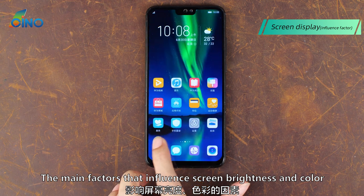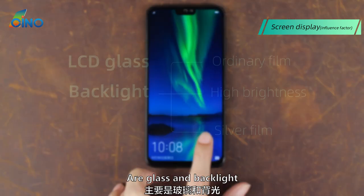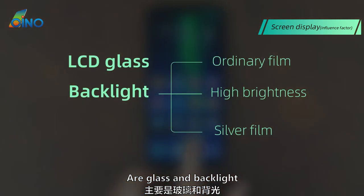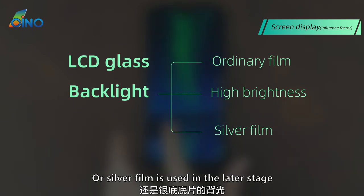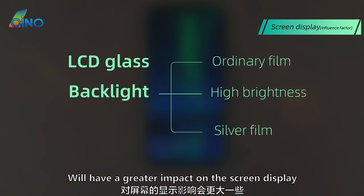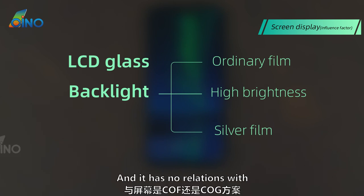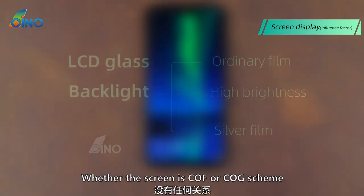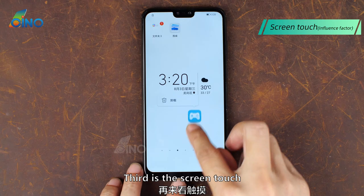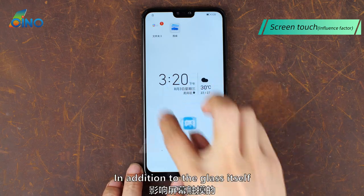Second is the screen display. The main factors that influence screen brightness and color are the glass and backlight, especially the backlight. Whether ordinary film, high brightness, or silver film backlight is used will have a greater impact on screen display, and it has no relation with whether the screen is COF or COG scheme.